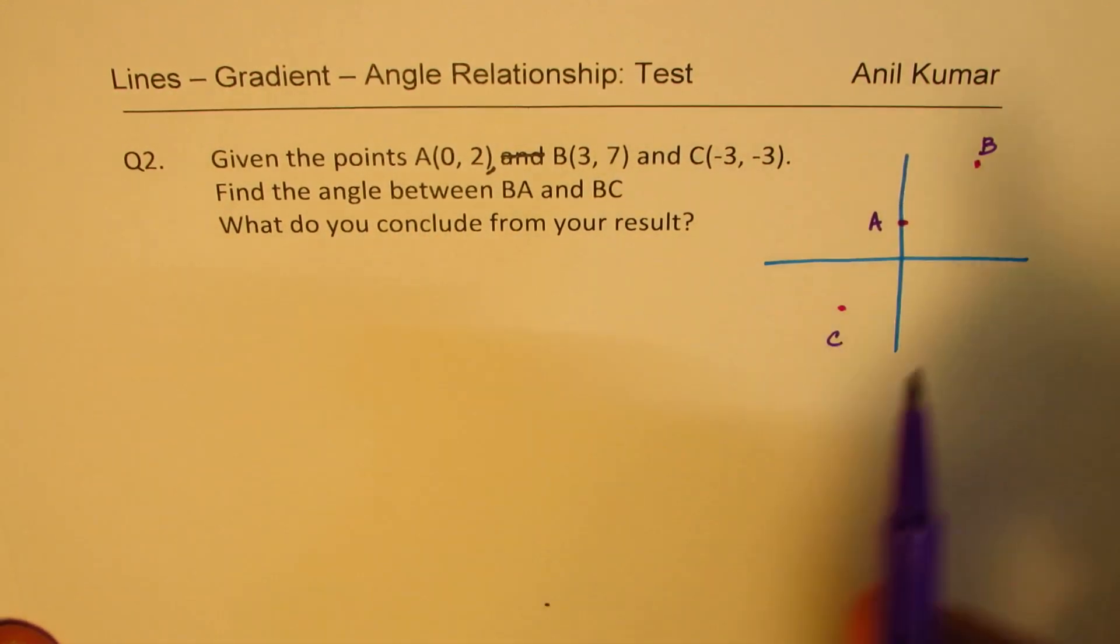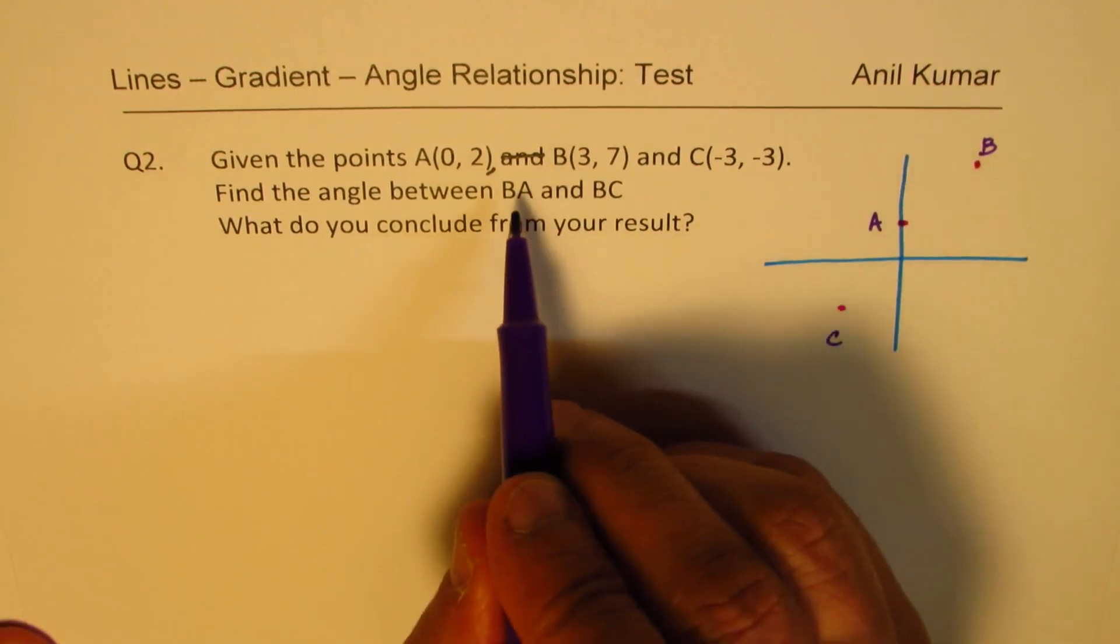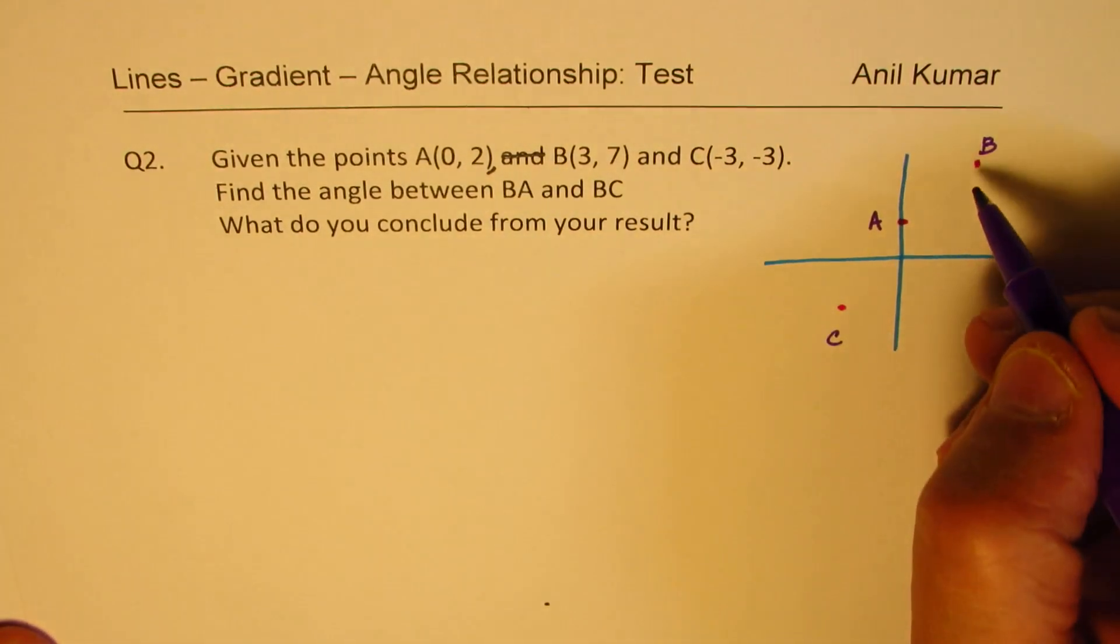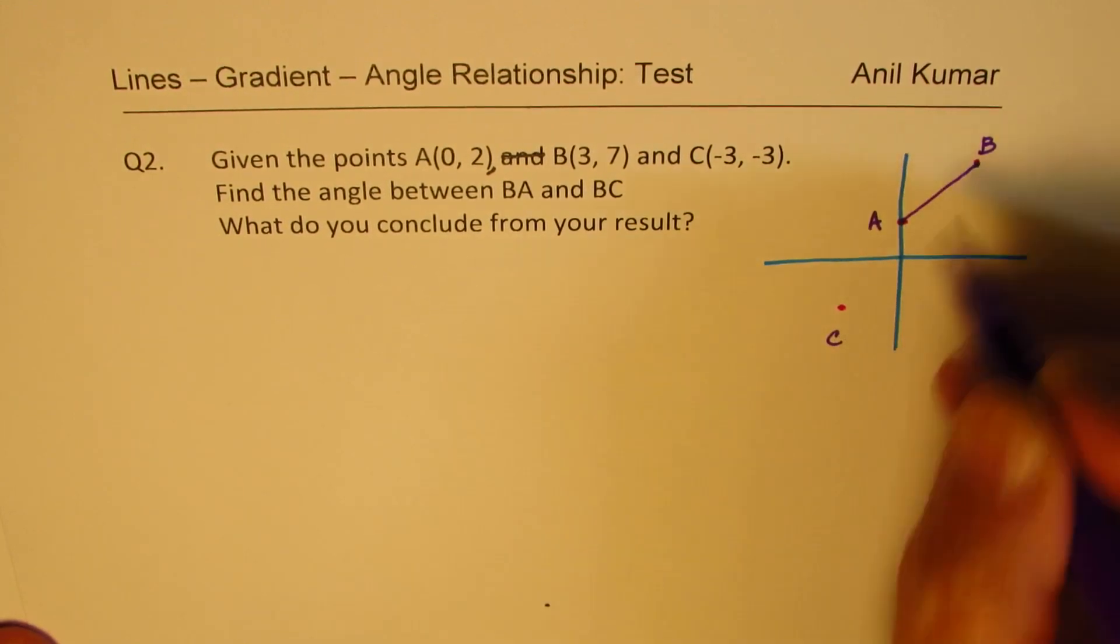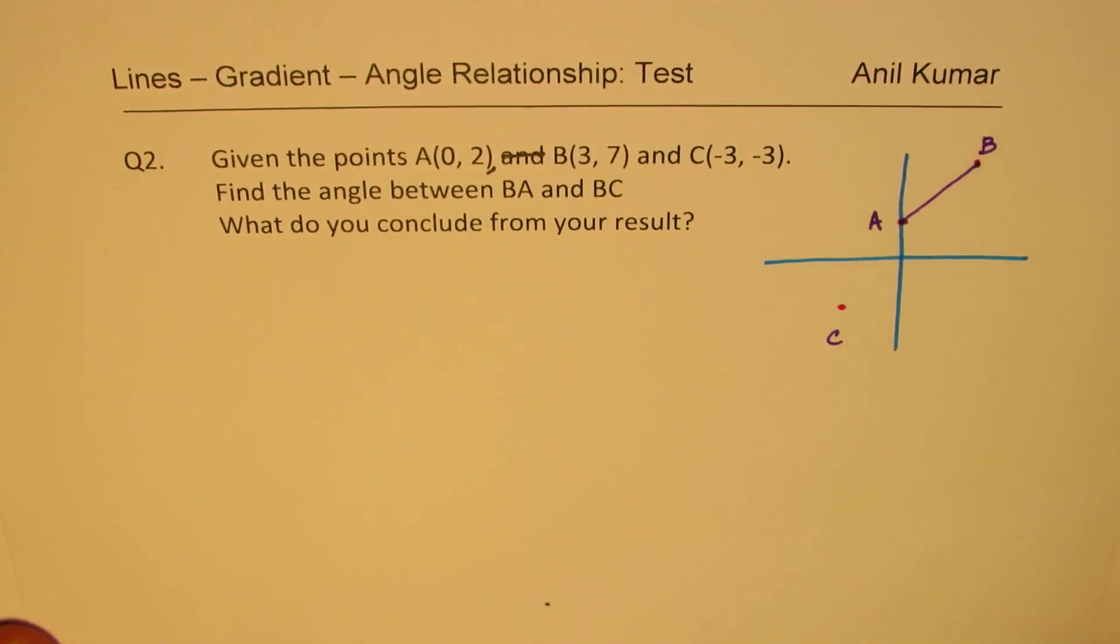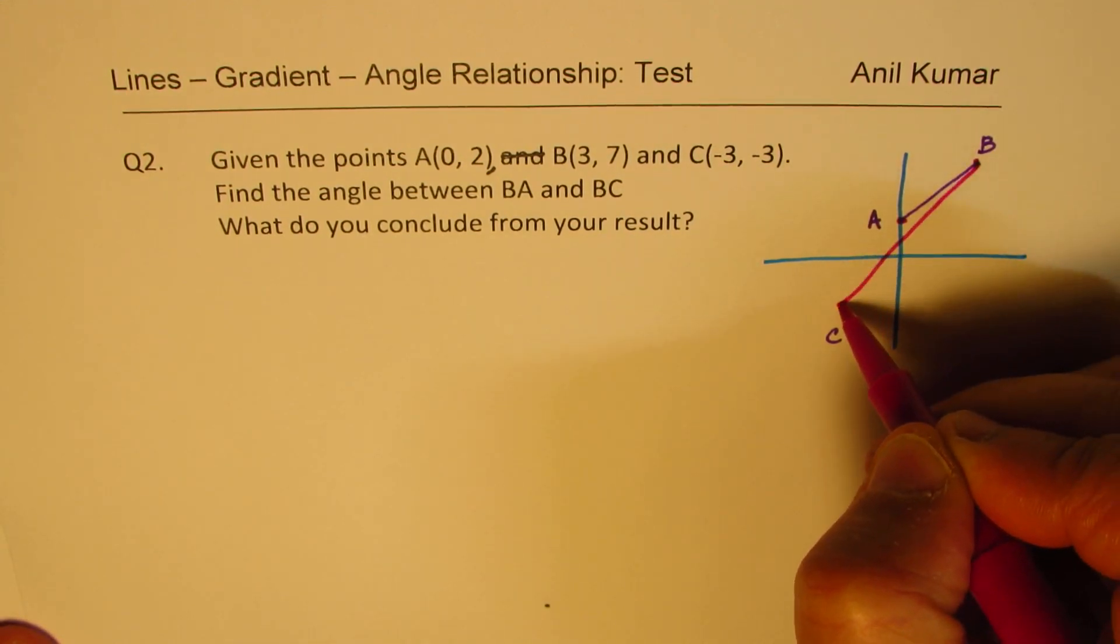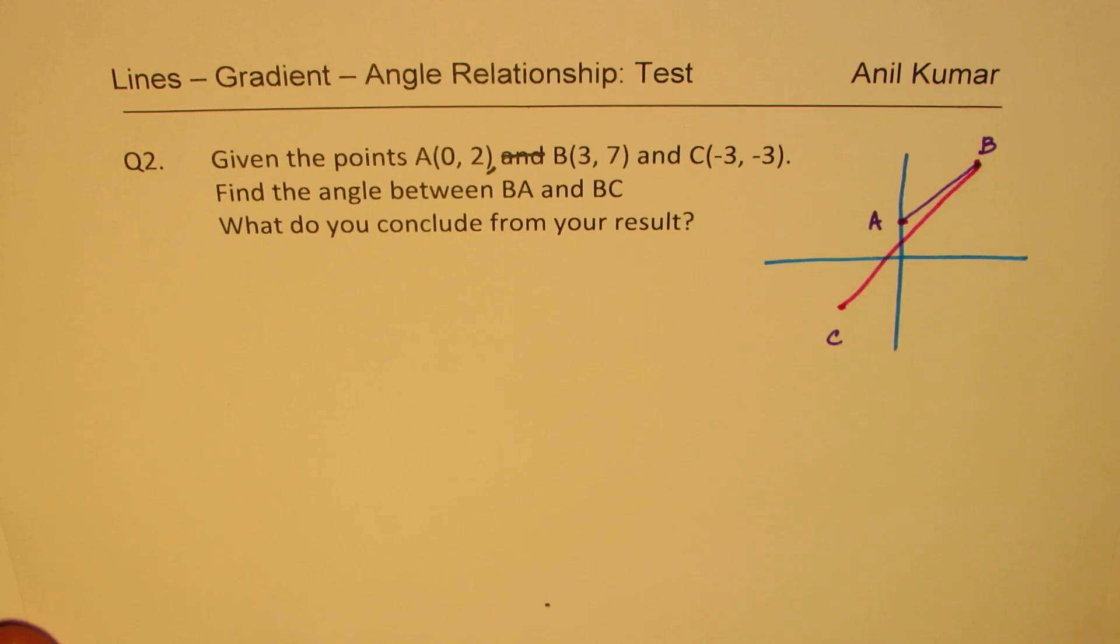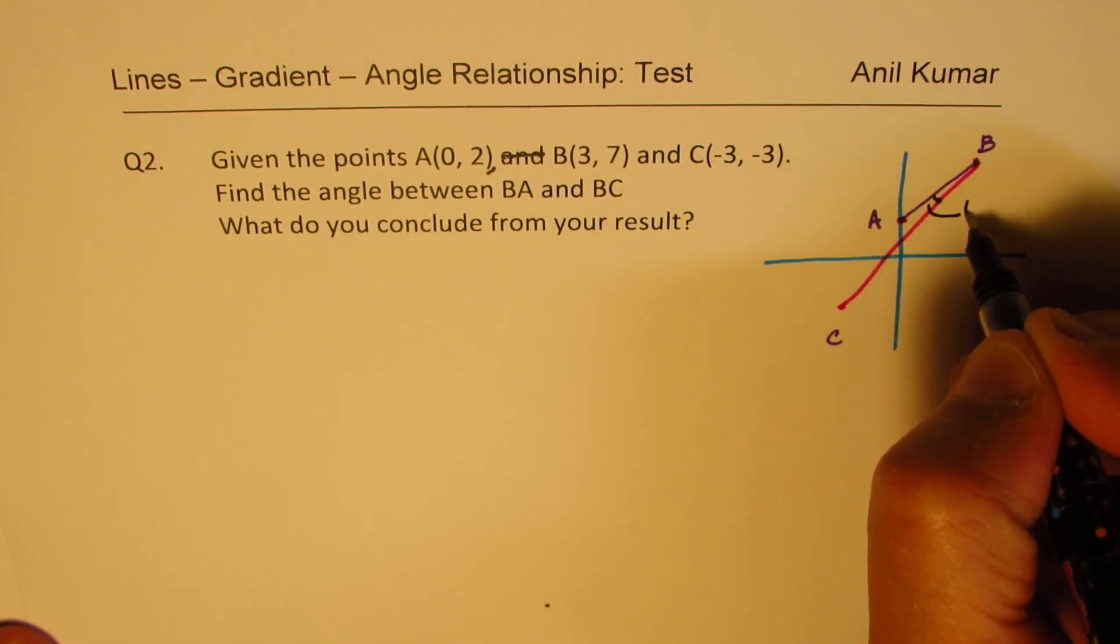We need to find the angle between BA and BC. So let me join BC also. So the angle which we are interested in finding is this angle, theta. So that's the angle which we need to find.